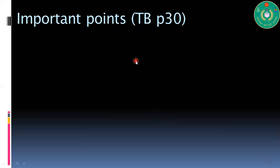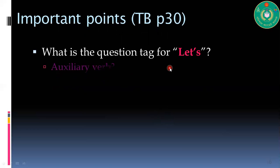Important points: What is the question tag for 'let's'? The auxiliary verb is 'shall' and the pronoun should be 'we'. We're going to discuss this in a later part. Let's go, shall we or will you?